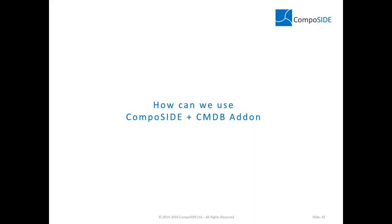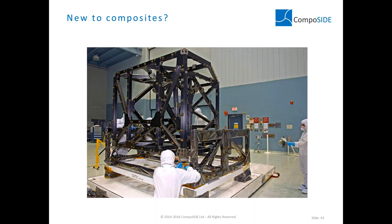Practically, how can you use Composite and the CMDB add-on? The first example: if you're an organization new to composites and currently evaluating the advantages of composites as a replacement for steel or aluminum structures looking at higher performance or lower weight — using Composite, you can import or build your own structures. Since the CMDB add-on includes both composites and metals, you can provide a side-by-side comparison to generate an initial business case without having to source material data through coupon testing.